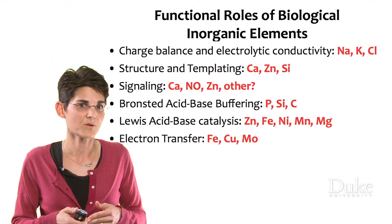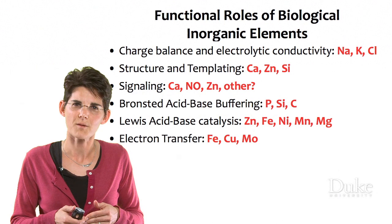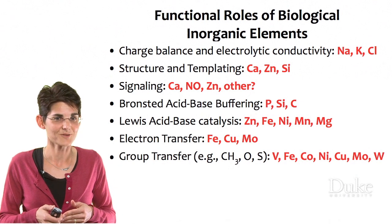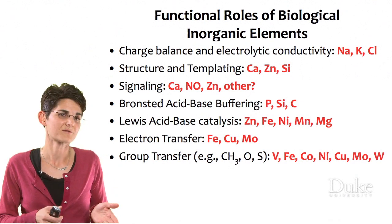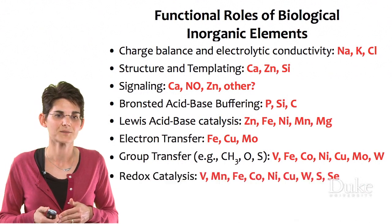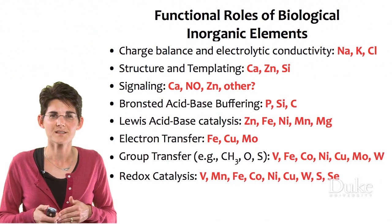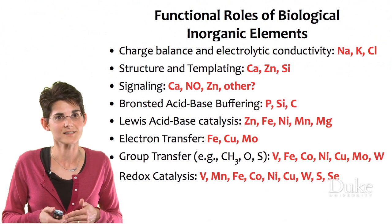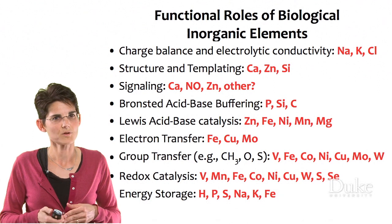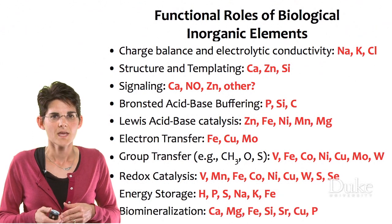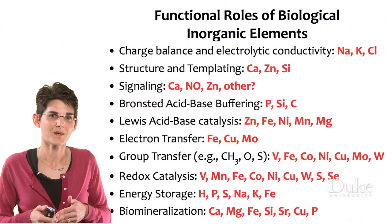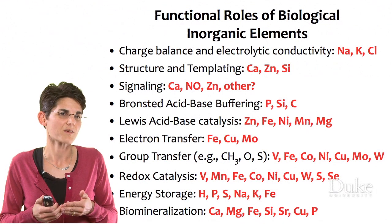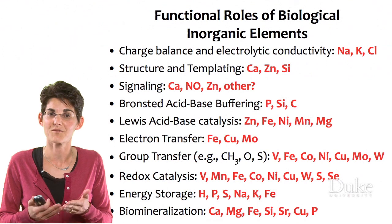Electron transfer is another example — we saw that in cytochrome C oxidase with those four electrons. Where do they come from and how do they get where they're going? Metal cofactors have a lot to do with that. And atom and group transfer, like the oxygen in hemocyanin or in your hemoglobin, has to be transferred from one thing to another, and metal ions do a lot of that transfer. Redox catalysis is another area — think about the biological roles as well as small molecules, because a lot of metal ions can do redox catalysis. Energy storage: how do you store energy in chemical bonds and what are the inorganic components of that? And biomineralization, like your bones and calcium. But next time you're at the beach and you see shells, think about how those minerals form in those structures that we think of as inorganic minerals, but they're found in a very biological setting.